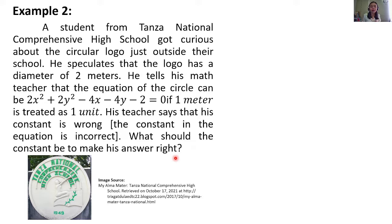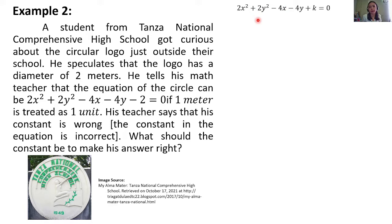Ang gagawin natin is this: ilet muna natin yung constant as k. So we will have 2x² + 2y² − 4x − 4y + k = 0. Yun yung isosolve natin — kung ano yung value ng k para maging tama yung equation.